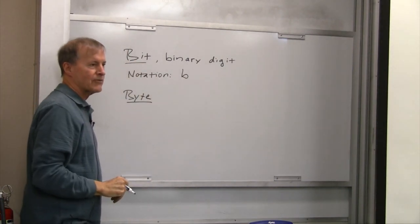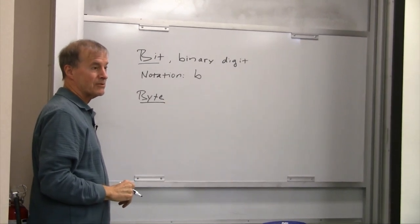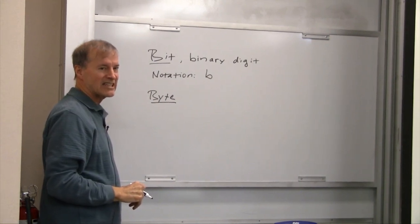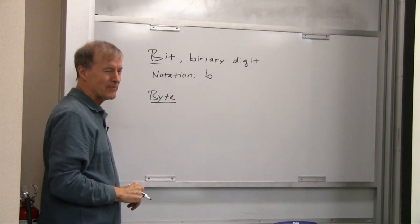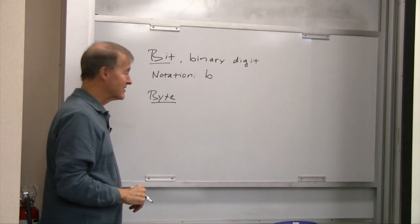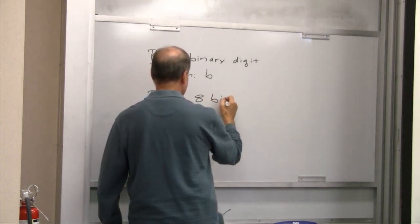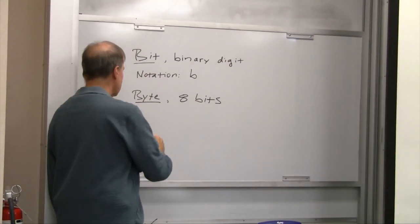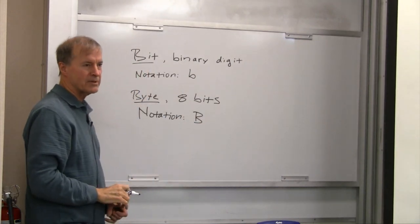When quantifying digital information, the next thing we really have to know is a byte — spelled b-y-t-e, pronounced 'byte.' There are eight bits in a byte. The notation for a byte is an uppercase B, so a big B is a byte and a little b is a bit, and there are eight bits in a byte.